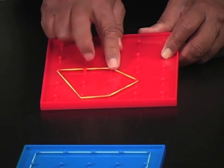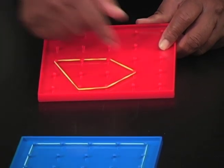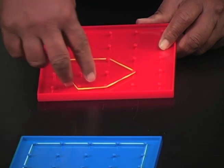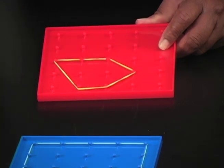One, two, three, four, five, six pegs are on, two pegs inside. So how many different figures can I make such that there are six pegs on, two pegs inside?